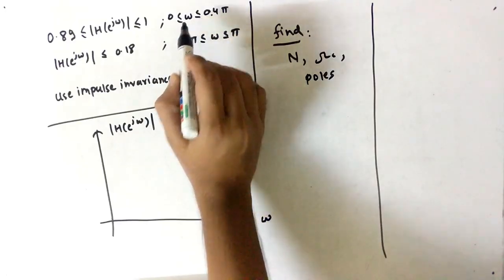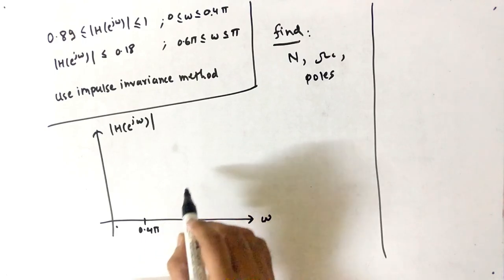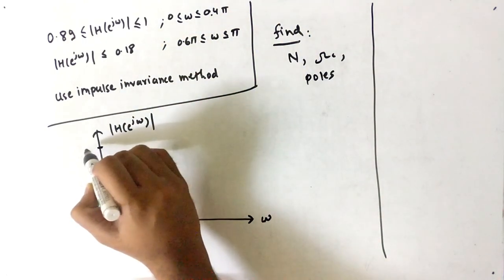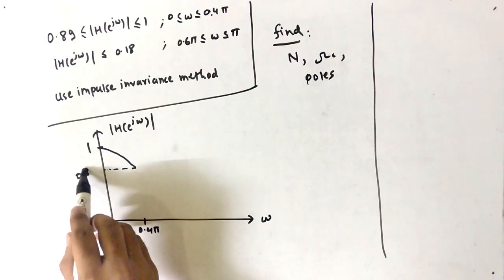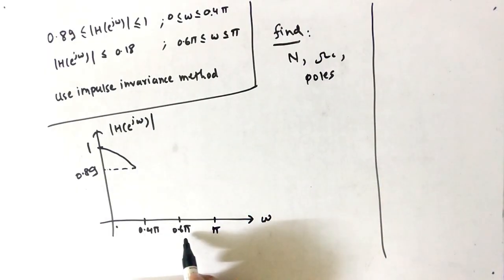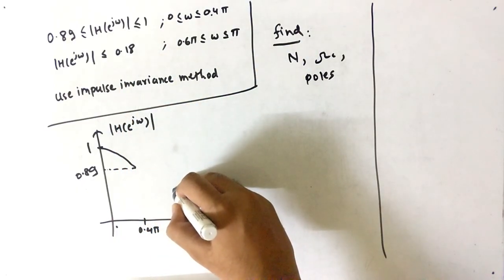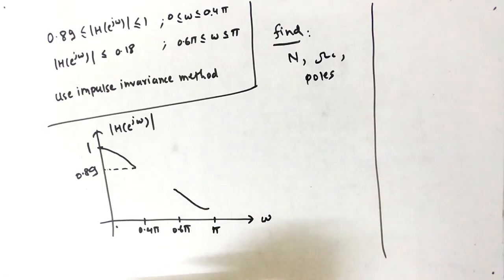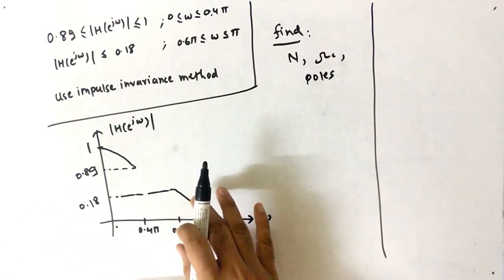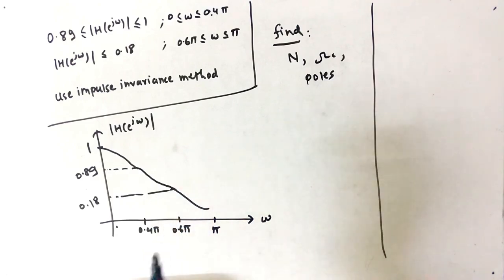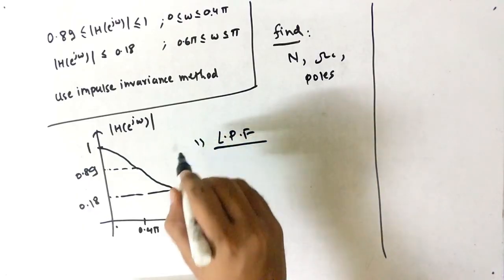On the graph, omega ranges from 0 to 0.4π where the amplitude decreases from 1 to 0.89. From 0.6π to π, the magnitude decreases from 0.18. After completing the graph, we can see this is nothing but a low pass filter.